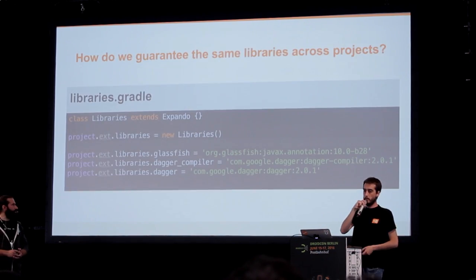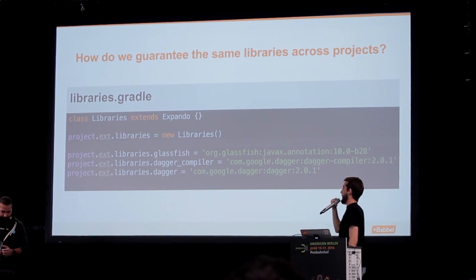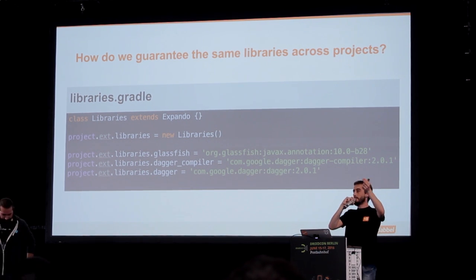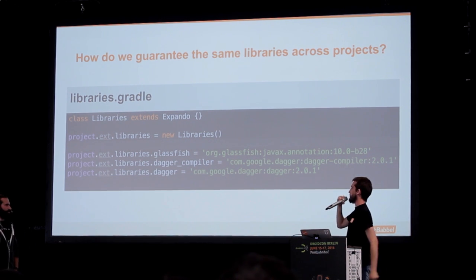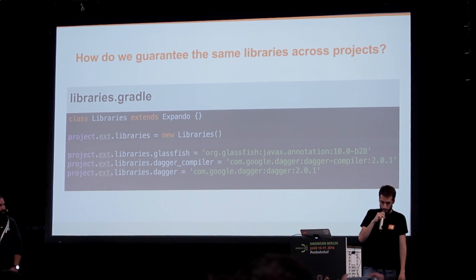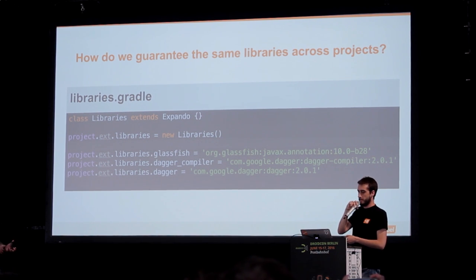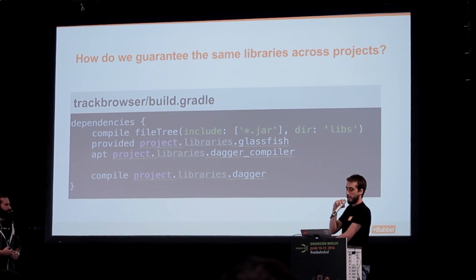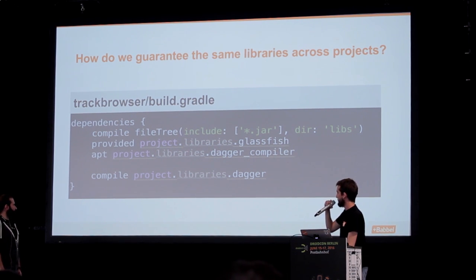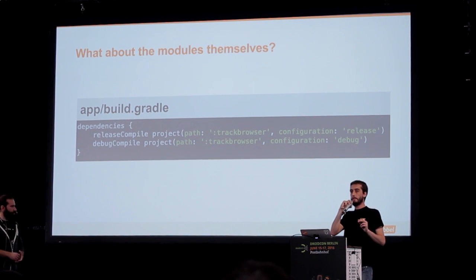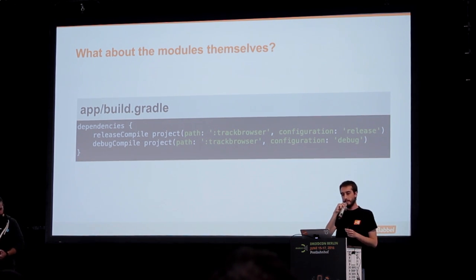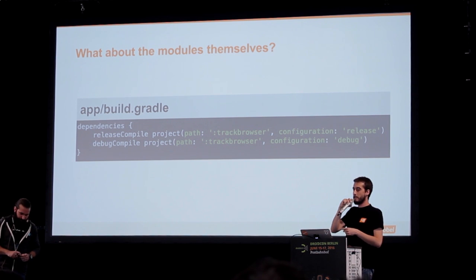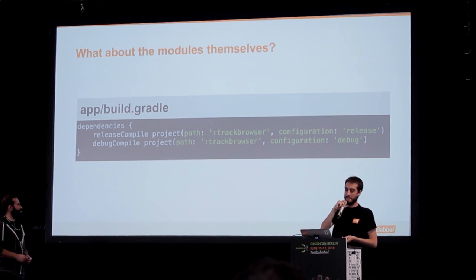At the top level of the project, we have a Groovy file that pins the libraries to the project scope — for example, Dagger is pinned there. As we move into the modules, this is an example of our track browser module, which gathers these libraries from the project scope. For the modules themselves, we keep it the old way, mainly because if you want to use Android Studio features like renaming, it's better to have it defined locally rather than pinned in some other scope.